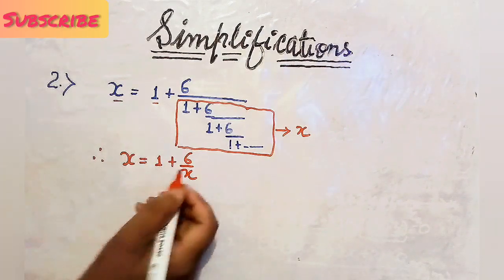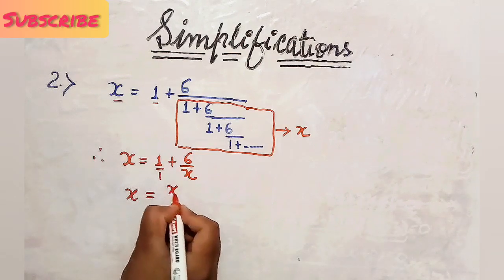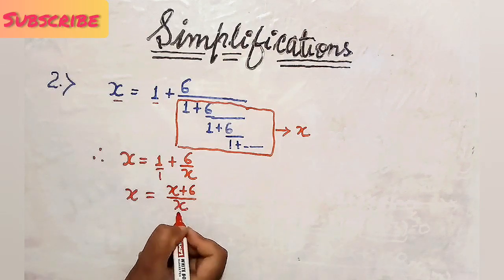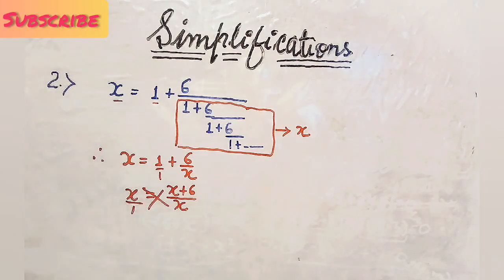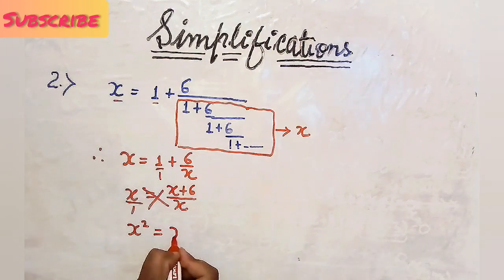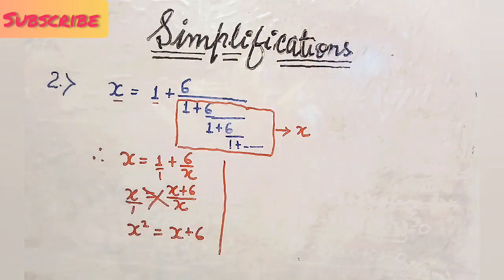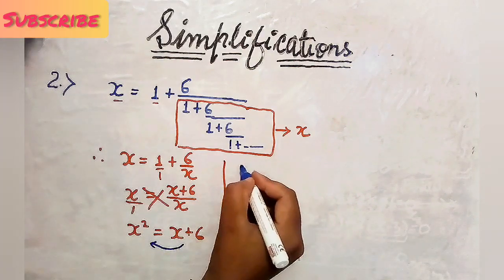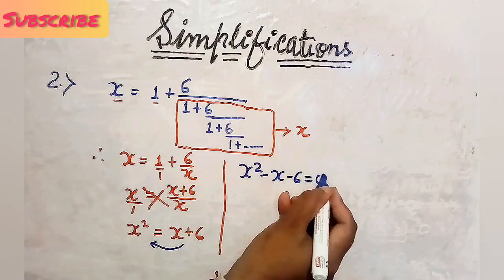Now let us simplify it. Taking LCM on the right-hand side, the LCM of X and 1 will be X, giving us X plus 6 upon X. Cross-multiplying, X times X gives X square, equals 1 times X plus 6, which is X plus 6. Now we got the same equation again — bring X plus 6 to the left side and the equation will be X square minus X minus 6 equals 0.